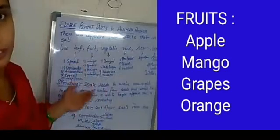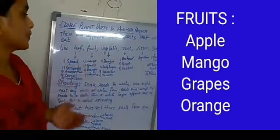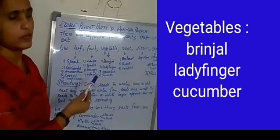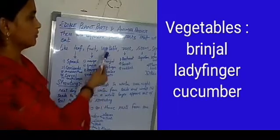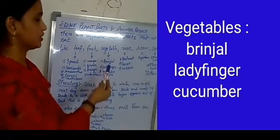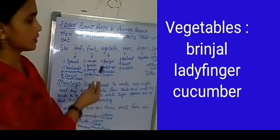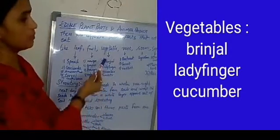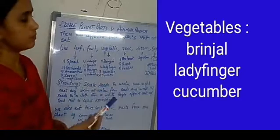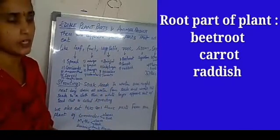Fruits — we have so many fruits from the fruit part of the plant, like mangoes, grapes, oranges, watermelon. The vegetable part includes brinjal, lady's finger, cucumber, tomato — we have so many vegetables. These are the vegetable part of the plant. Vegetables we generally cook and eat, while fruits we eat directly.